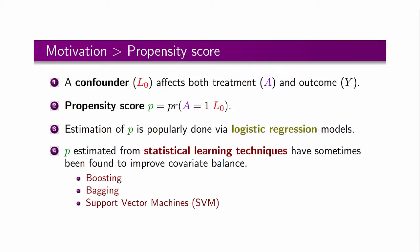Now let me discuss the basics first. A variable is a confounder if it affects both treatment and outcome. When we have too many confounders or too many levels of confounder, propensity score is a useful tool. To estimate propensity score, logistic regression models are popularly used. However, in the propensity score literature, it has been shown that the covariate balance sometimes improves if the propensity scores are estimated using statistical learning techniques such as boosting, bagging and support vector machine.